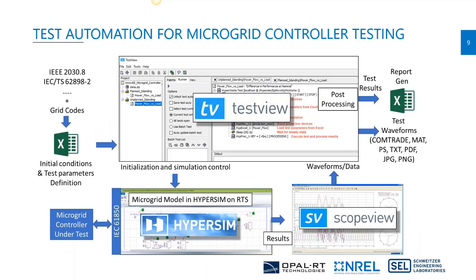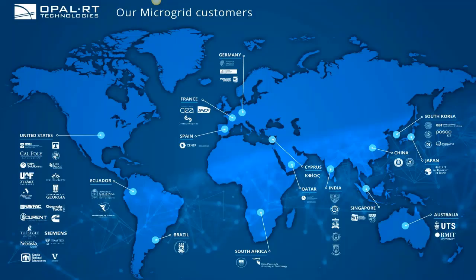The HyperSim suite also offers test automation. Test parameters and scenarios from standards defining microgrid control system testing can be provided in an Excel file. TestView automatically reads them and runs simulations in HyperSim; ScopeView records and generates waveforms from the running simulation. Post-processing produces reports in Excel — pass/fail reports or performance indicator reports — enabling fully automatic report generation.